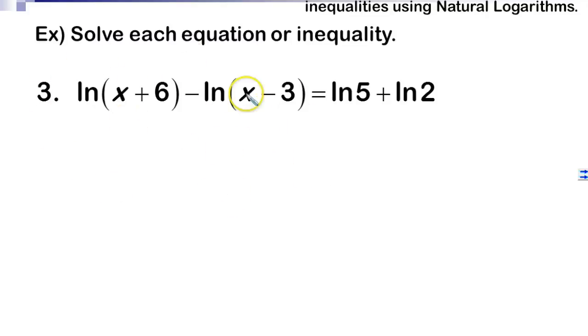Now we're going to use the properties of logarithms similar to what we did before. If we have a minus, what do we do? That's right, we divide. If we add two logarithms, we multiply. This whole thing is going to end up as ln of x plus 6 over x minus 3.